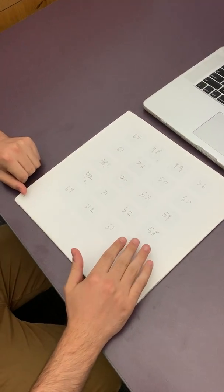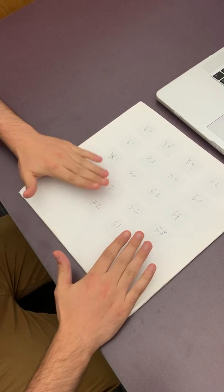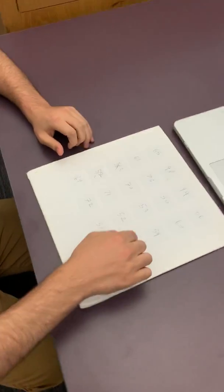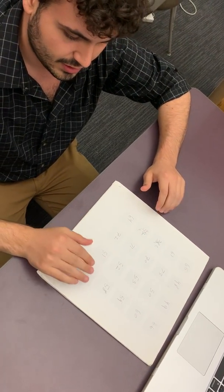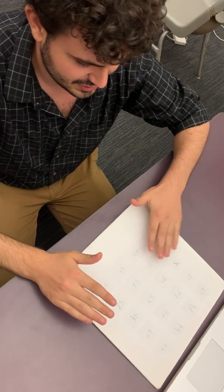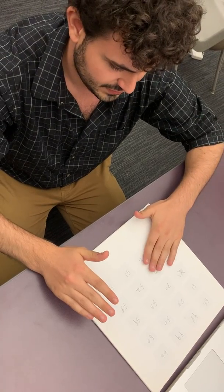So the way we have it set up is so that multiple squares actually control the same thing. So all four of these squares should cue the bass drum. Sometimes it's finicky, but these four squares control the snare drum.